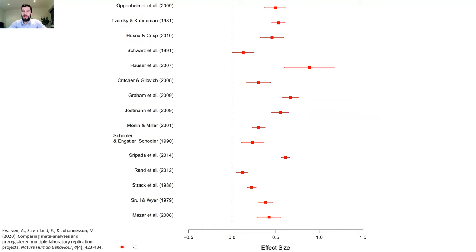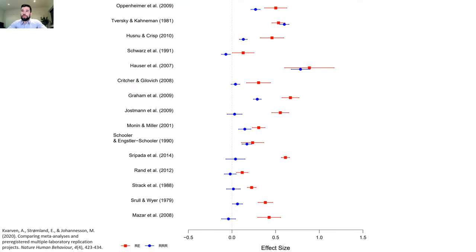If you look at the original effect size estimates based on the published studies, you can see large effects. And since this is a documented case of publication bias, unsurprisingly, the estimates from registered replication reports were much smaller than the original effect size estimates based on meta-analysis. This large discrepancy is attributed by many to publication bias. One way to use this example is to see how well different publication bias adjustment methods can provide estimates closer to the registered replication report estimates.